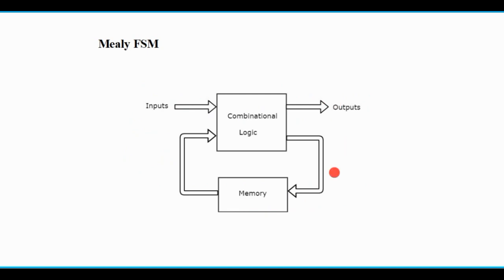This shows the block diagram of a Mealy FSM. All FSMs are synchronous sequential machines. In digital systems there are two types of circuits: sequential circuits and combinational circuits. Sequential circuits are circuits whose output depends on both the present and previous input, while for combinational circuits the output depends only on present inputs. This FSM is a sequential circuit, so its output depends on both present and previous inputs, and we need a memory element along with the combinational logic.